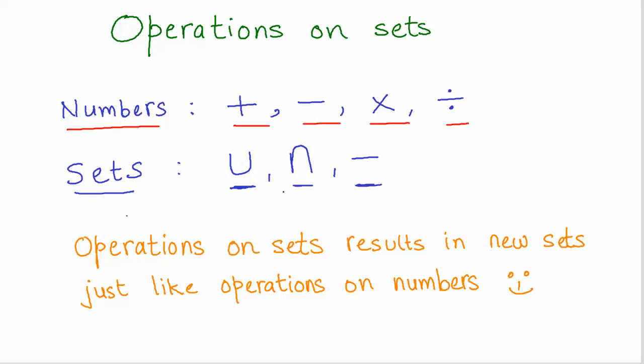For example, if you're adding 4 plus 5, you're getting 9, so you get a new number. Now what does that mean when we say I'm doing operations on sets?